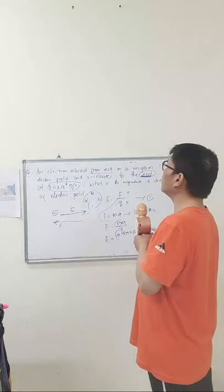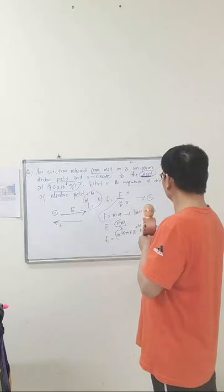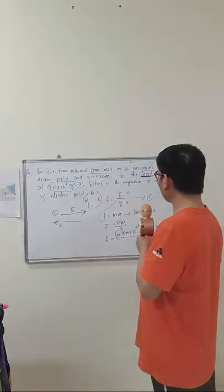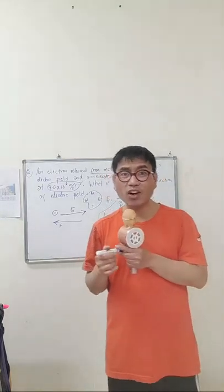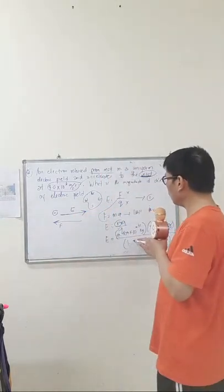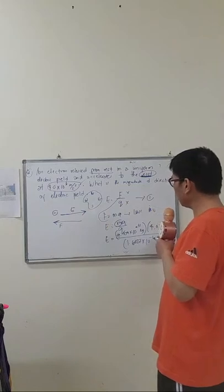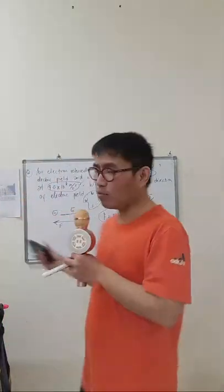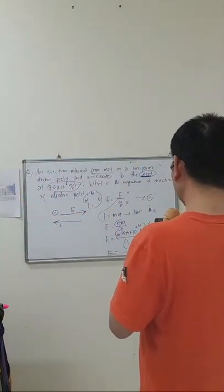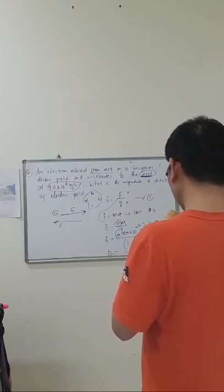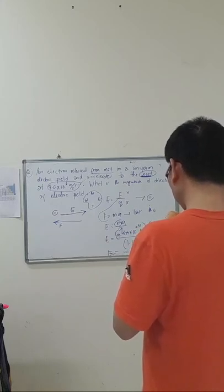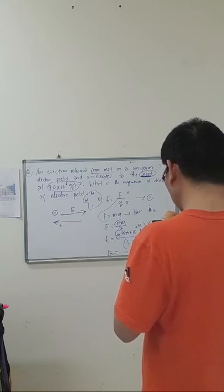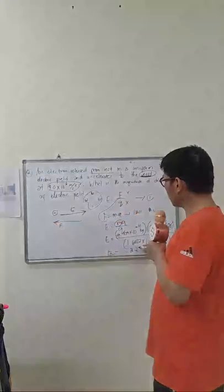Then acceleration is given in the problem which is 4.0 times 10 to the 6 meter per second squared over the charge. This is the charge of an electron. I teach you already the standard. One electric charge is equal to 1.6027 times 10 to the negative 19 coulomb. So you will memorize the basics so that you can answer well, because not all the time will it be given. 4 times 10 to the 6 times 9.11 times 10 to the negative 31 divided by 1.6027 times 10 to the negative 19. Then your electric field would be 2.27 times 10 to the negative 5.